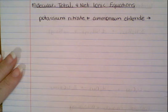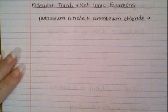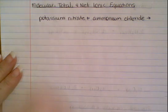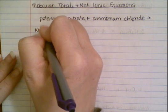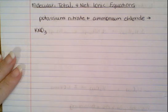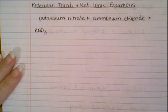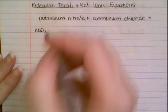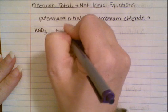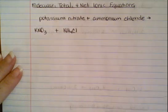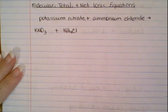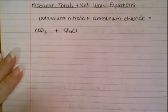This time I'm giving you words that you need to convert into compounds and then predict the products. I've got potassium nitrate, so that's KNO₃. K is a +1 and NO₃ is a -1, so these two balance one another out. And then I have ammonium chloride — NH₄ is a +1, Cl is a -1, so those balance each other out.